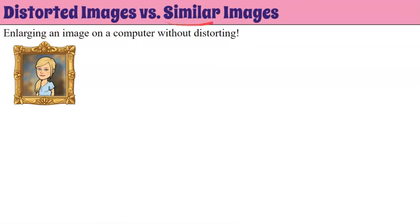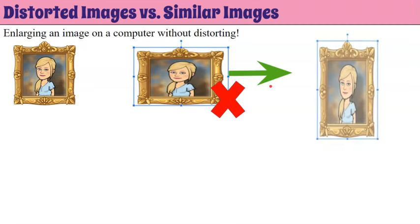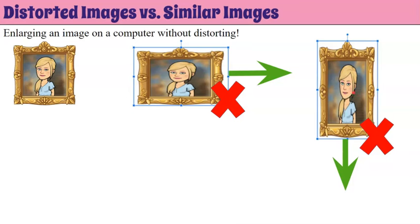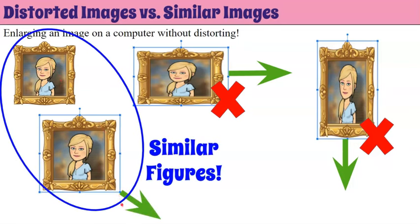Now let's talk about a distorted image versus a similar image. When enlarging an image on a computer, we want to do this without distorting it. This image is distorted because I only dragged it by one handle — I increased the width but not the length or height. Here's another one: I pulled down on this handle and it made the image taller but didn't change the width, so this would not be similar to the original. However, when you drag by the corner of the image, that creates an image that is similar to the original and won't be distorted.